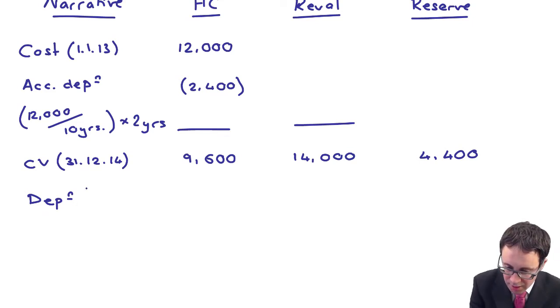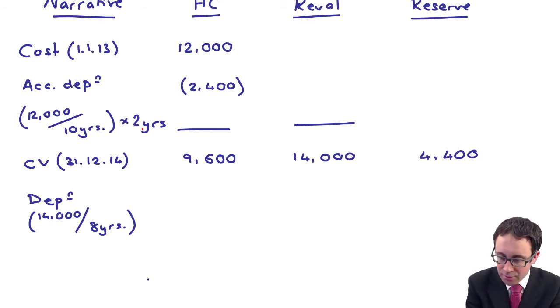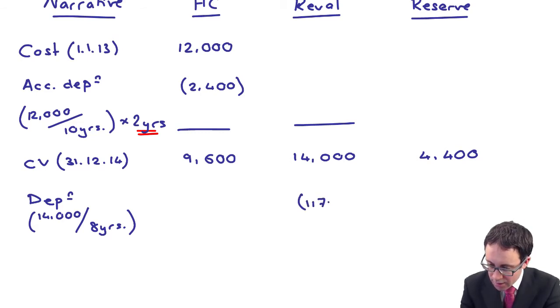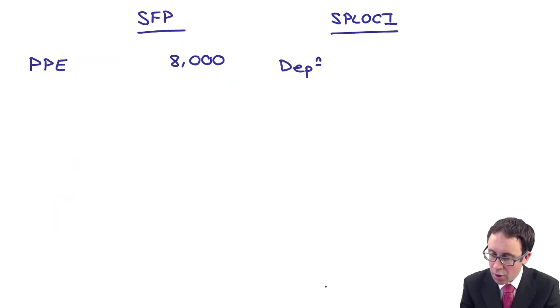Remember, we take the fair value, which is the 14,000 and divide it over the remaining useful life. It was originally 10 years, we've depreciated it for 2, so there are now 8 years left. 14 divided by 8 gives me 1750. We've just worked out the depreciation for the year. That 1750 depreciation will appear within the statement of profit or loss. You can reference that in your working.